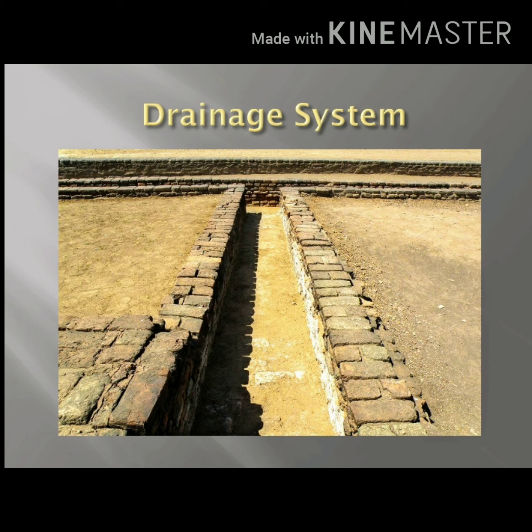Now our second feature is the drainage system. Mohenjo-daro, Lothal, and other cities are known to have a good drainage system. House drains emptied into the main drains.